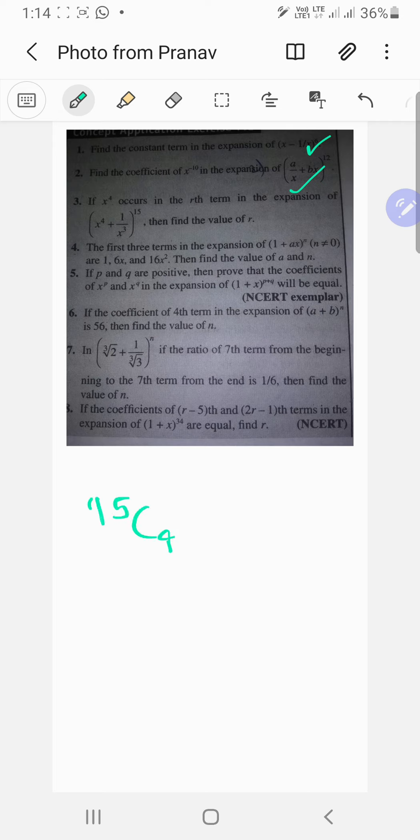It's gonna be 15 choose r. So it's the rth term in the expansion, so actually you should have r minus 1 over there. So it's 15 choose (r-1), and then you get (x^4) raised to (15 minus r minus 1), which will be 16 minus r.